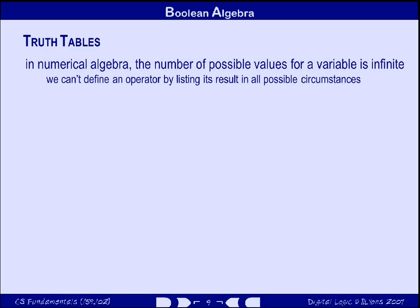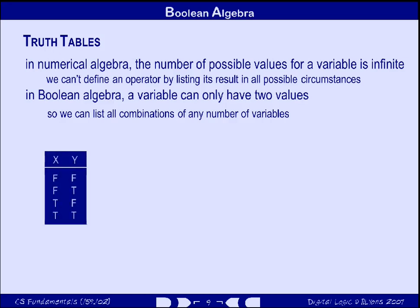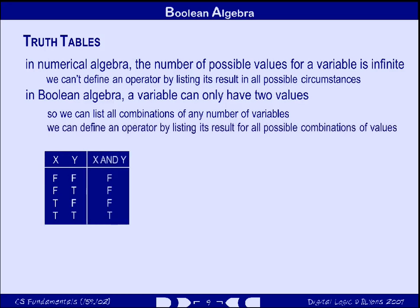We've established that there are infinite values in a numerical system, whereas in Boolean algebra we only deal with two-valued entities. This has the consequence that we can list all possible combinations of two values, or 3, or 8, or 25 for that matter — although the table would be fairly large in the last case with over 30 million entries, because it doubles in size for each new column. So we can use a truth table to define an operator by listing its outputs for every possible combination of input values. We can also use a truth table to prove or disprove a Boolean relation — for example, we could investigate whether NOT(A OR B) is the same as NOT A AND NOT B.